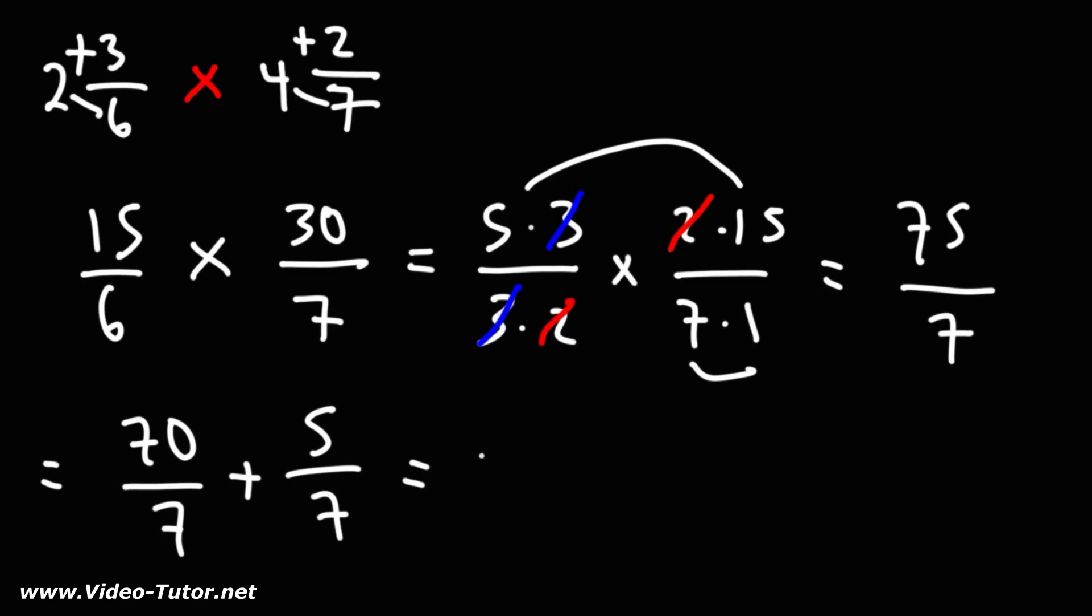Now, 70 divided by 7 is 10. So we have 10 plus 5 over 7. Whenever you have a whole number and a fraction, you could write it as a mixed number. So we could write that as 10 and 5/7. So that's the answer. That's how you can multiply two mixed numbers using cancellation.